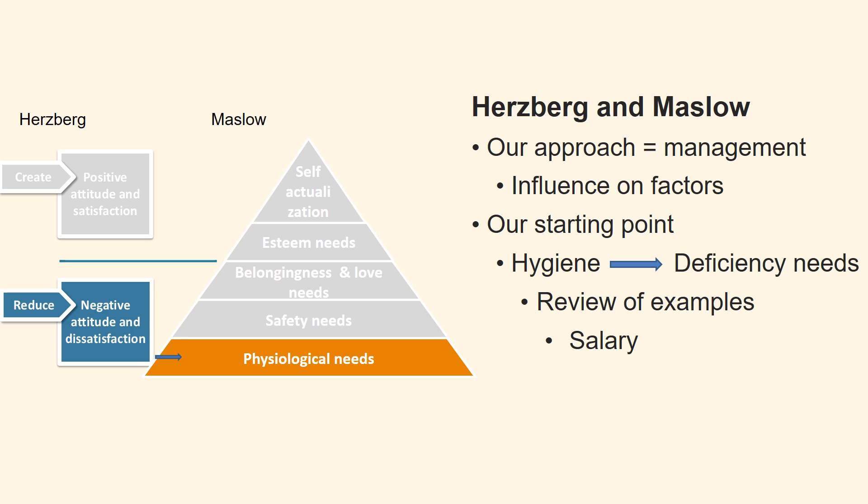The first example is salary. If it is the only way to get food on the table and a roof over your head, it affects the psychological needs. It very much depends on the level of social security in the country. In most countries, salary affects the safety needs, which is also one of Maslow's three deficiency needs. Money in the bank gives the employee a feeling of security.